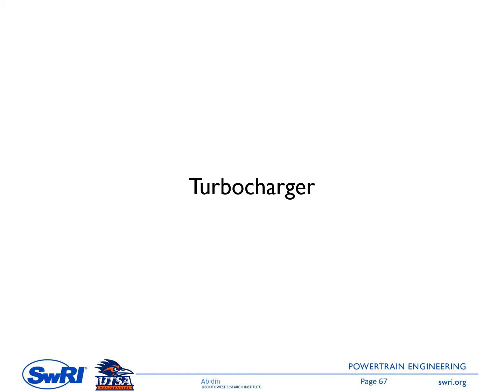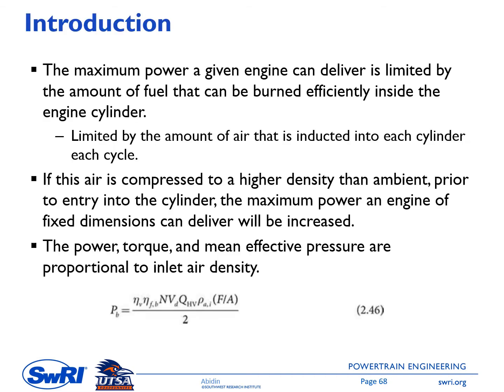The next topic is turbocharger. This is one of the popular topics in internal combustion engines. The maximum power a given engine can deliver is limited by the amount of fuel that can be burned efficiently inside the engine. In chapter 3, we learned about the range of equivalence ratio that can be used to have efficient combustion — roughly between 0.5 up to 1.5. Beyond that range, we won't have efficient combustion; in fact, we might not have combustion at all.